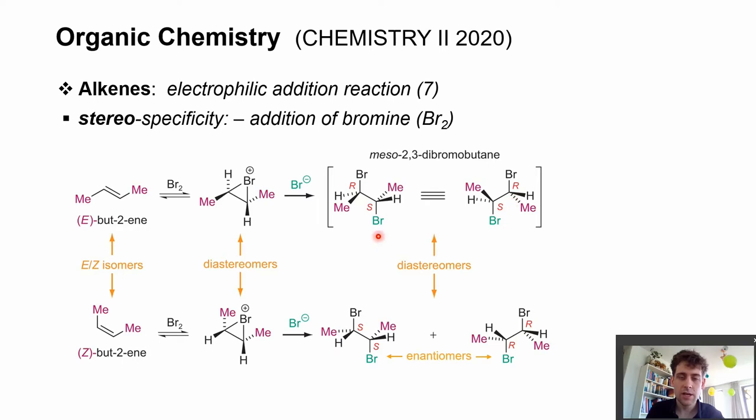If we compare that to the addition to the Z-alkene, we see the stereochemistry is now different. Previously the stereochemistry was in this cis configuration. We see now that both methyl groups are pointing away from us, so they are at the back of the paper plane.